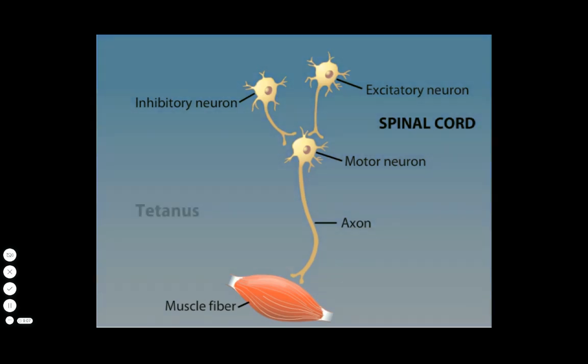In the diseased state, inhibitory neurons fire, but they fail to release their neurotransmitter molecules. The excitatory neurons, therefore, act unopposed, resulting in muscle spasms that are characteristic of tetanus.